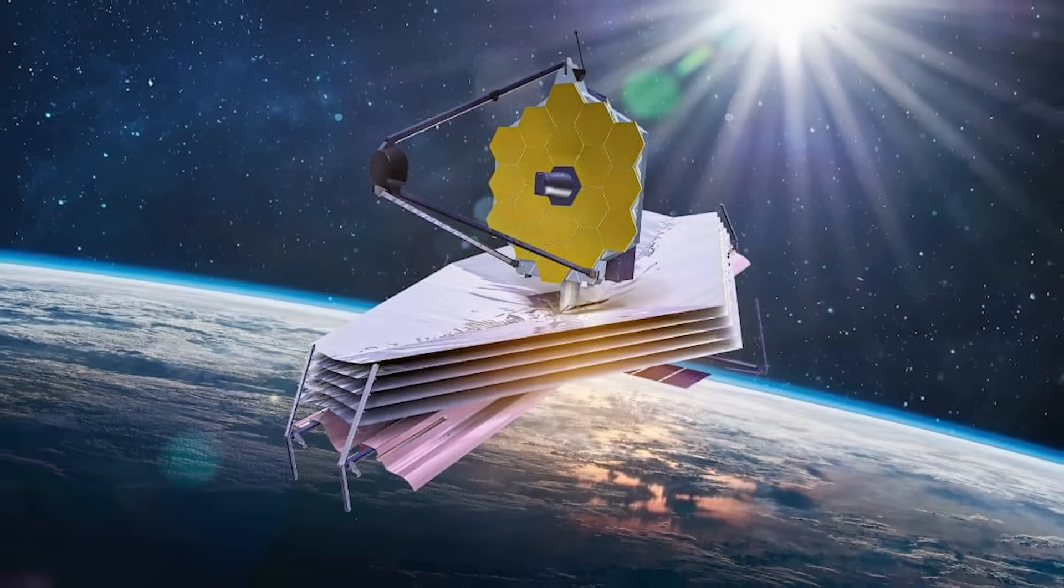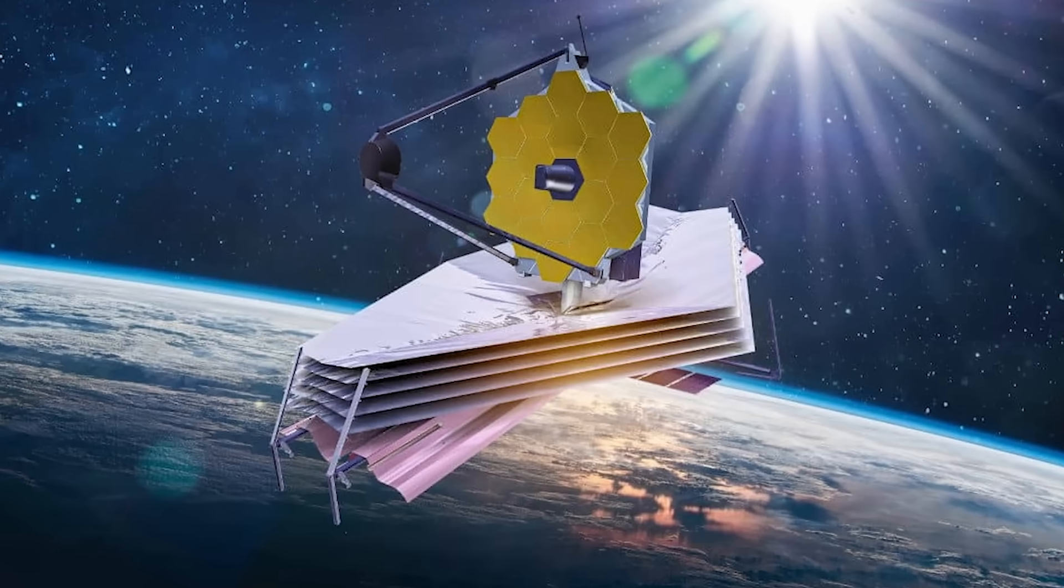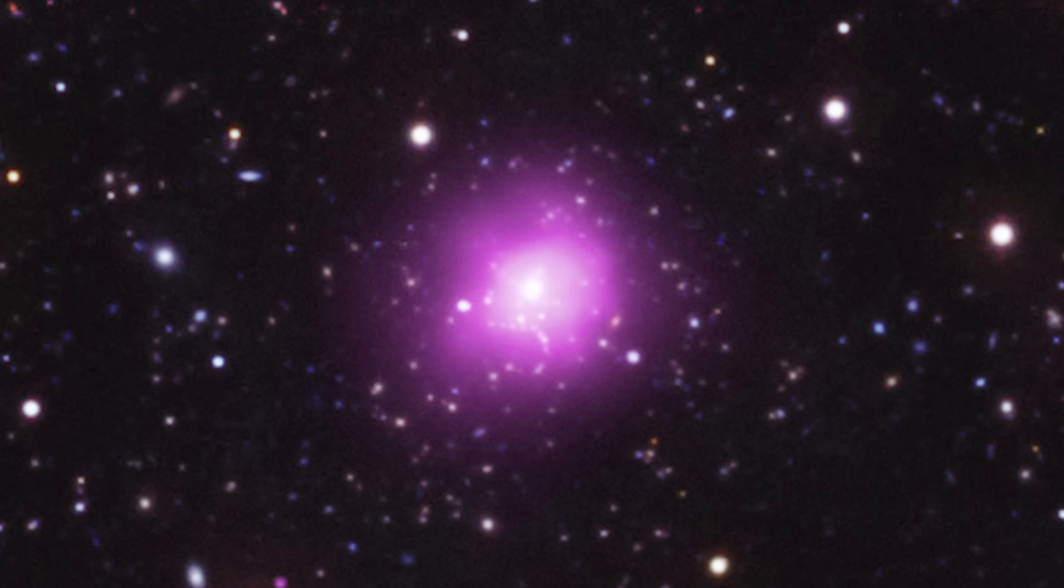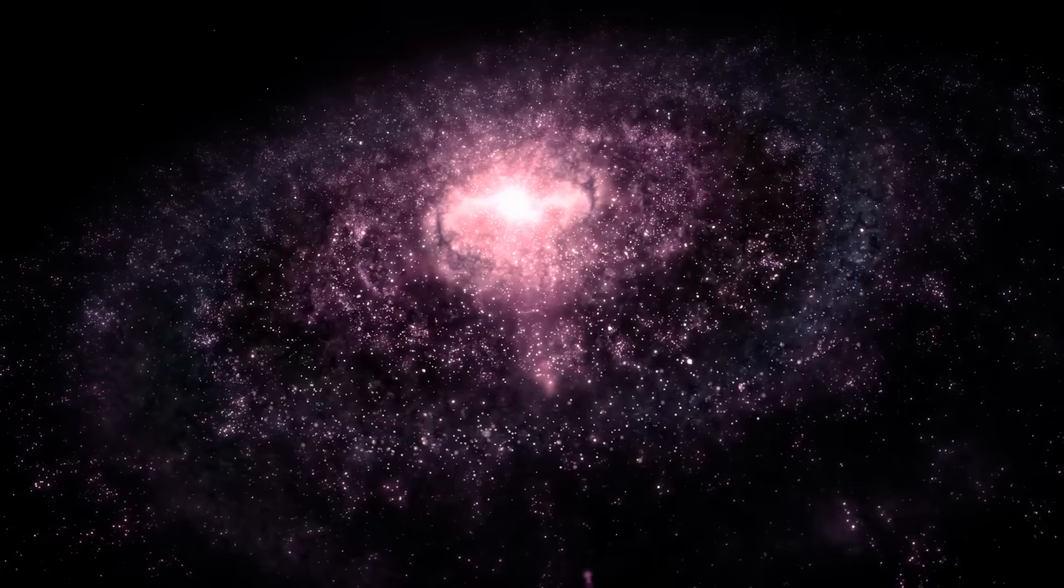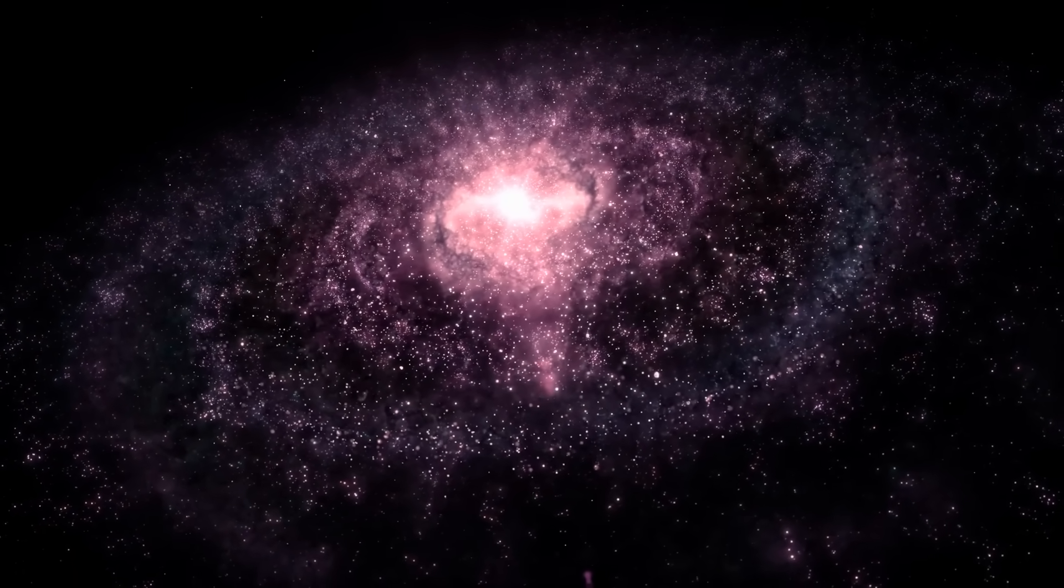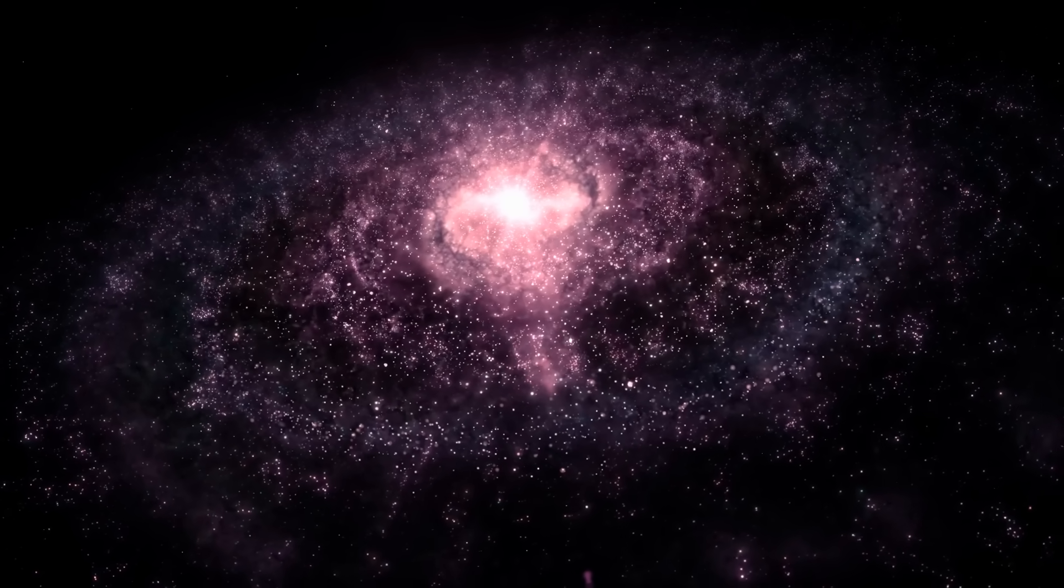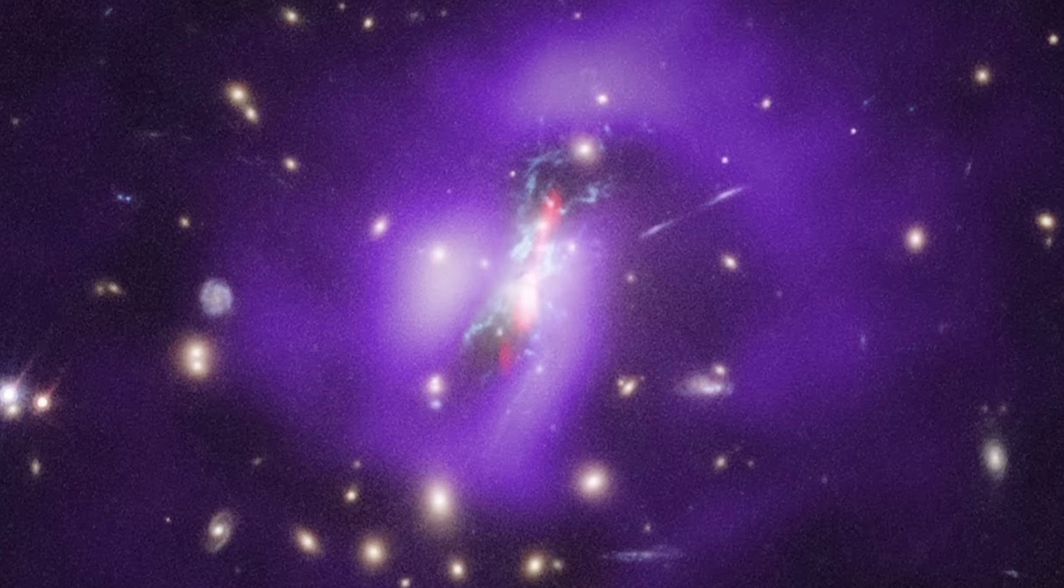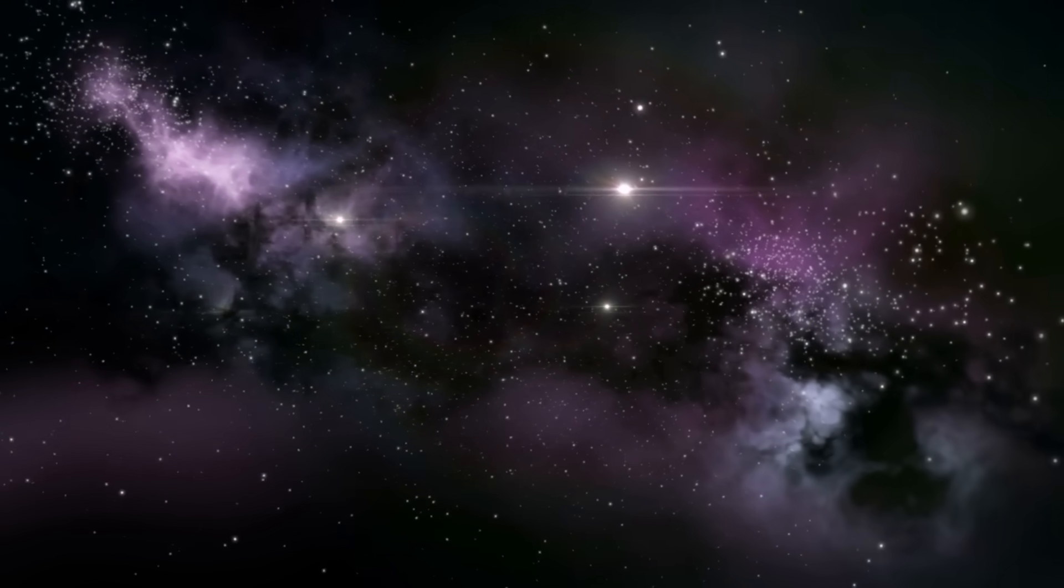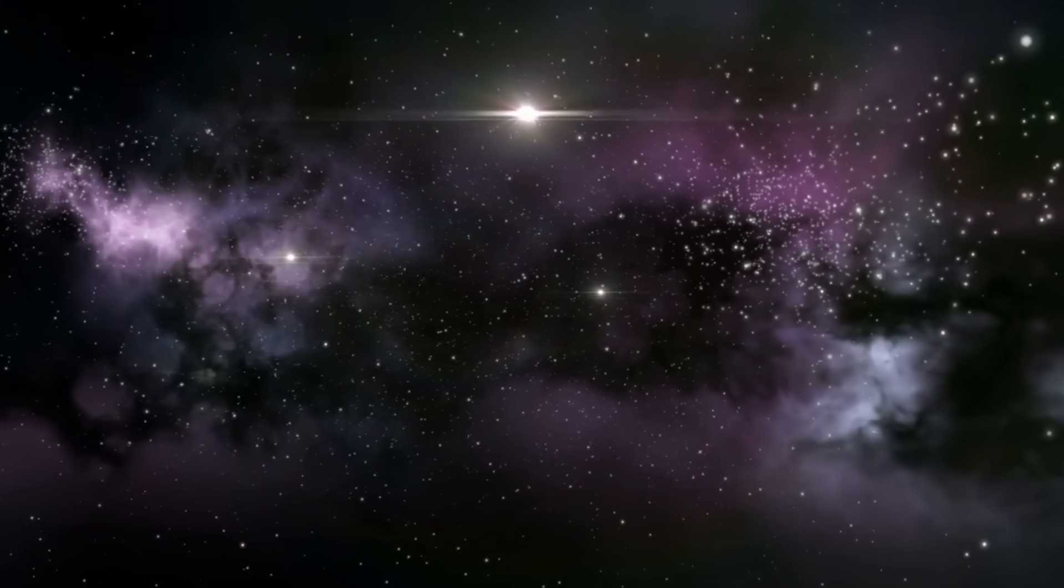The telescope also provided groundbreaking insights into the Phoenix Galaxy Cluster this year, revealing why this galaxy is churning out stars at a crazy rate. Located 5.8 billion light-years away, the Phoenix Cluster is the largest ever seen, and its core galaxy has been a mystery to scientists. Normally, the central galaxy in a cluster is red and dead, meaning it's done making stars. The Phoenix Galaxy is pumping out 1,000 new stars every year, which is 1,000 times higher than the average galaxy. So how is this happening?